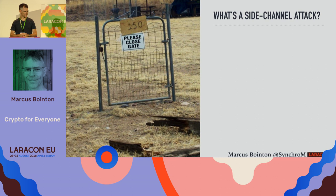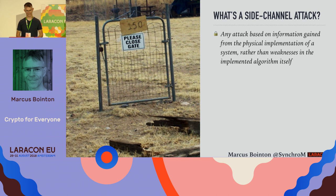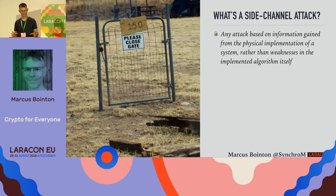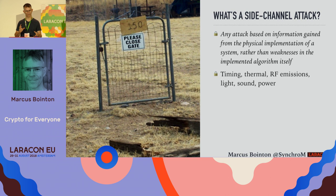I mentioned side channels earlier. A side channel, according to Wikipedia, is any attack based on information gained from the physical implementation of a system rather than weaknesses in the implemented algorithm itself. That's why I chose this picture of a gate — it does exactly what it's intended to do, but the way it's been implemented means you can just walk around it. In software, we're talking about timing, thermal and RF and light, sound and power emissions — all ways that data can leak out of systems.